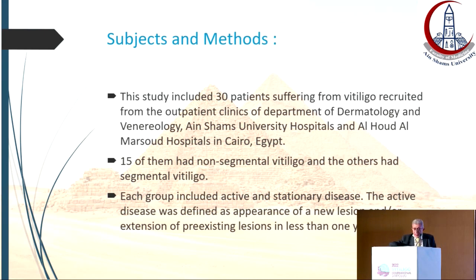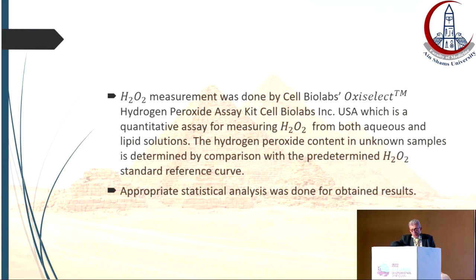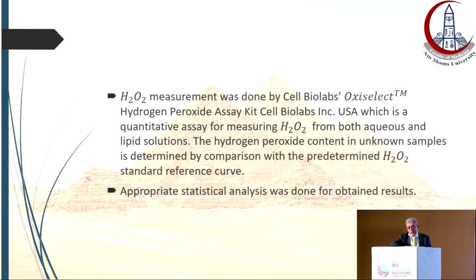For this purpose, 30 patients were included, divided into two equal groups, each having active and stationary disease. Two punch biopsies were taken from each patient — one from the normal skin and the other from the margin of the lesion. Hydrogen peroxide measurement was done by an assay kit, where the content in any unknown sample is determined by comparison with a predetermined standard reference curve.